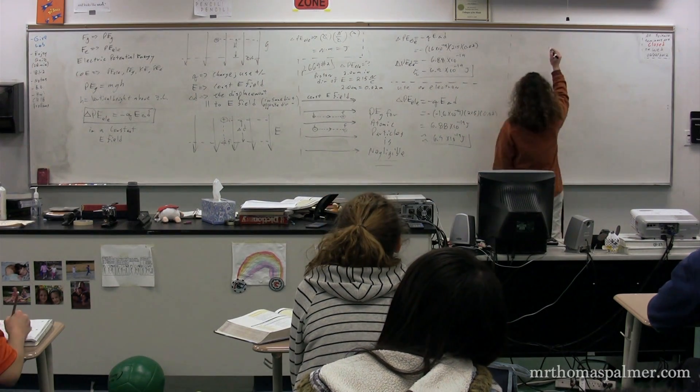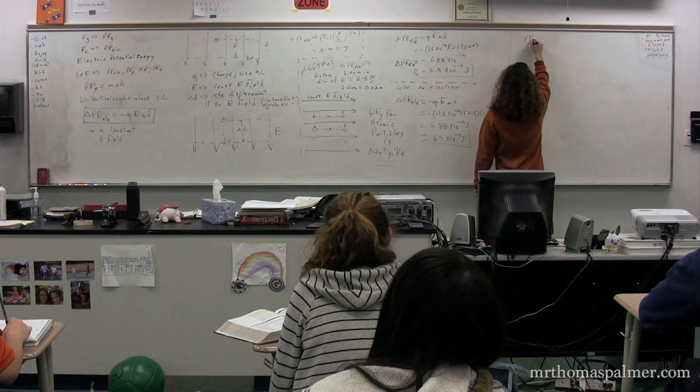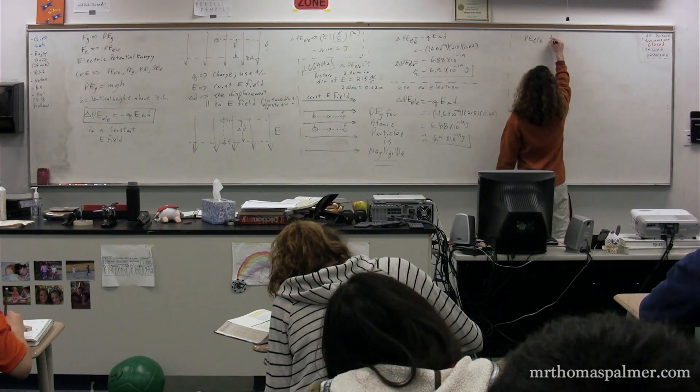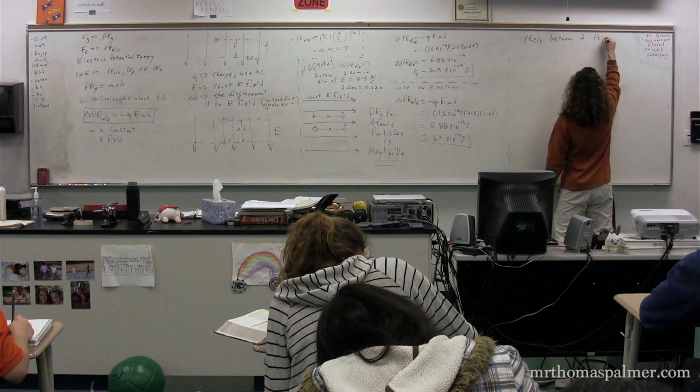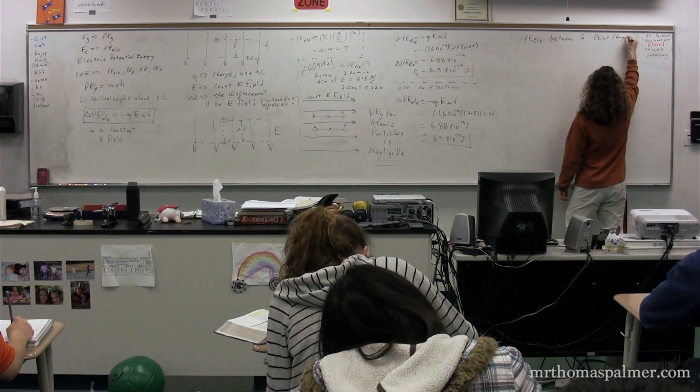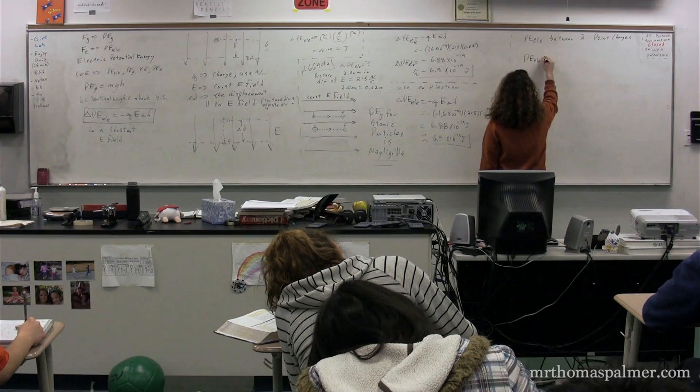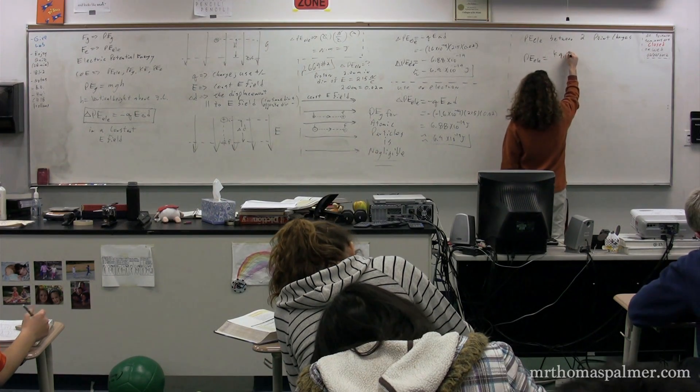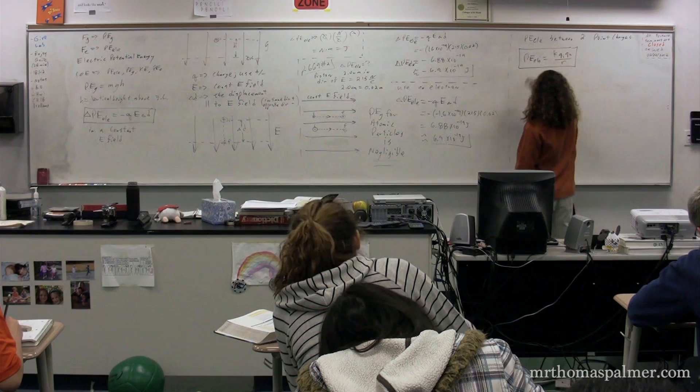Now we need to talk about the electric potential energy that exists between two point charges. So the electric potential energy between two point charges looks like this. The electric potential energy is equal to KQ1Q2 over R, and that is another boxed equation.